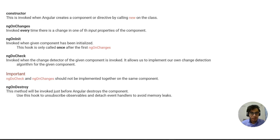ngDoCheck is invoked when the change detector of the given component is invoked. It allows us to implement our own change detection algorithm for the given component. If you want to define custom behavior during change detection, you can do so in ngDoCheck. It's important to know that ngDoCheck and ngOnChanges should not be implemented together in the same component — you can handle things in either one, not both.